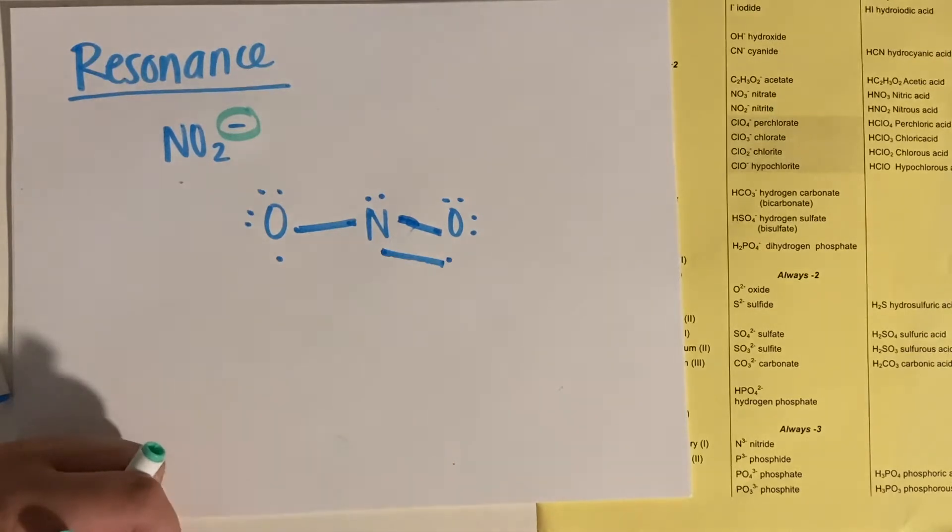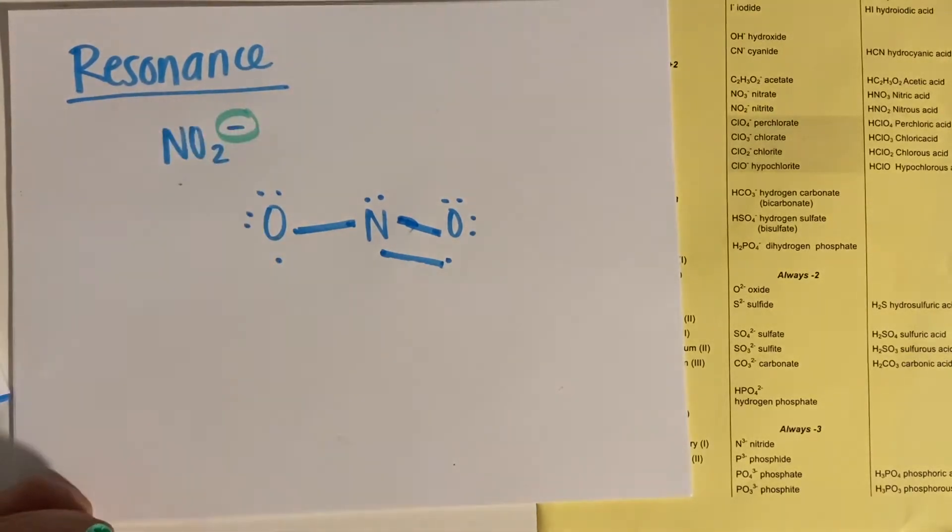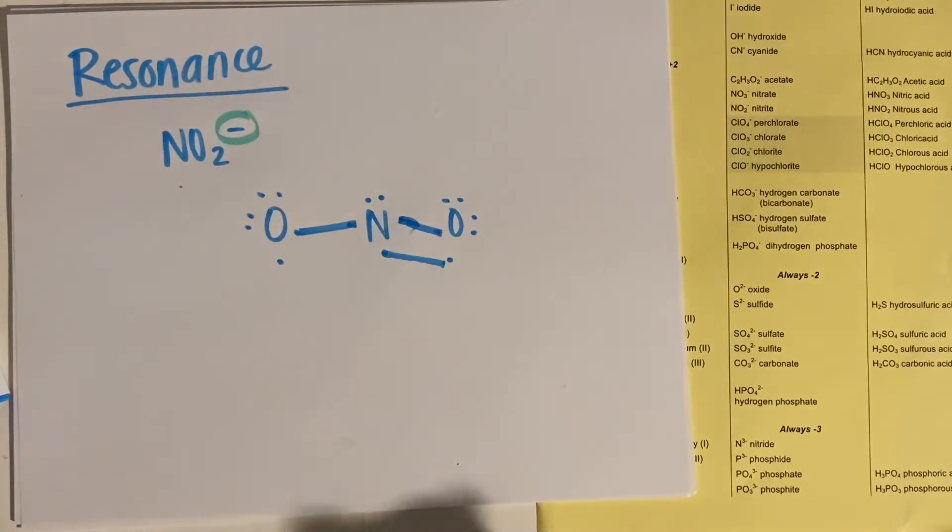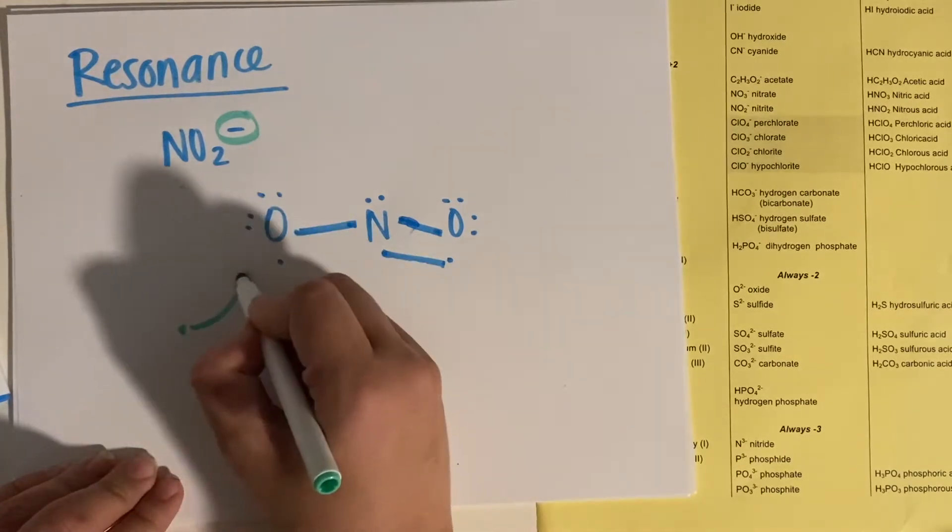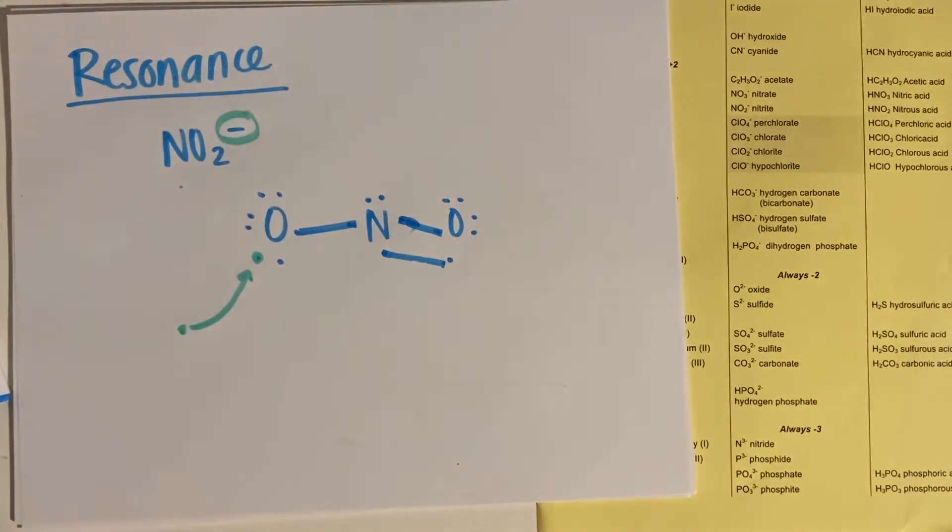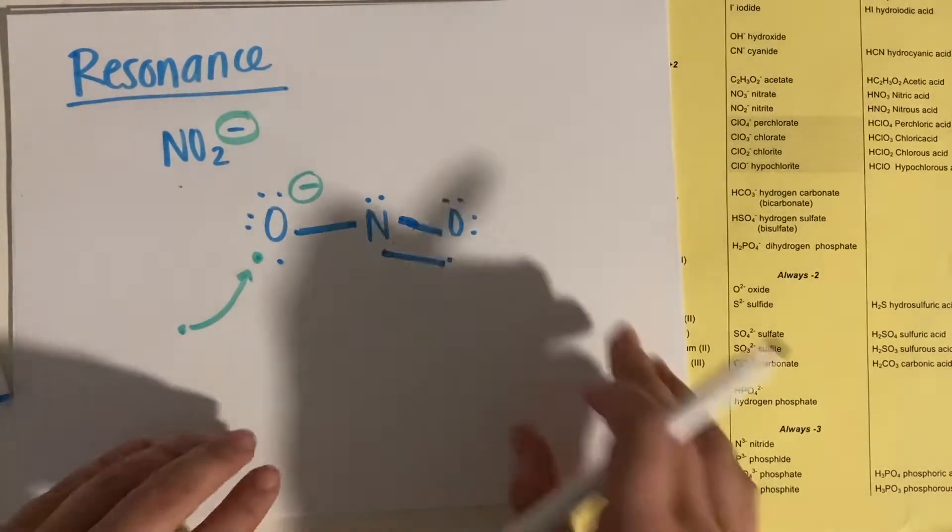This oxygen is desperate to try and get an eighth electron, so this minus sign comes in and says we're going to gain an electron from somewhere. He's going to steal that electron and have a negative charge. So let me draw this nicer.